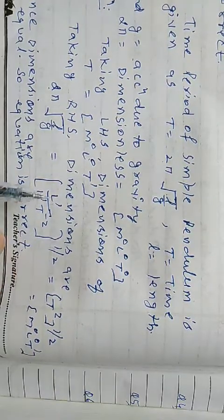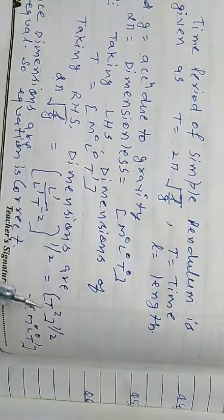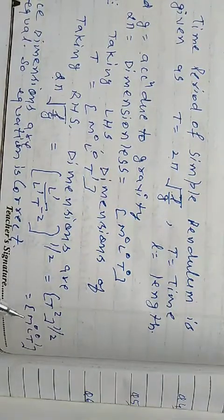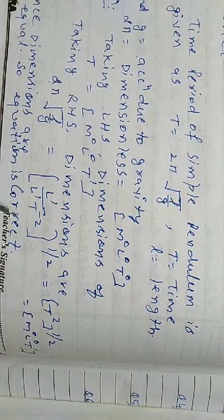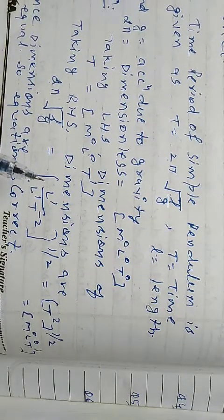So we can write 1 by 2. After solving this we get t power 2, 1 by 2. We get m⁰l⁰t¹. Dimensions of LHS, dimensions of RHS, these are equal. So we can say that equation is correct.